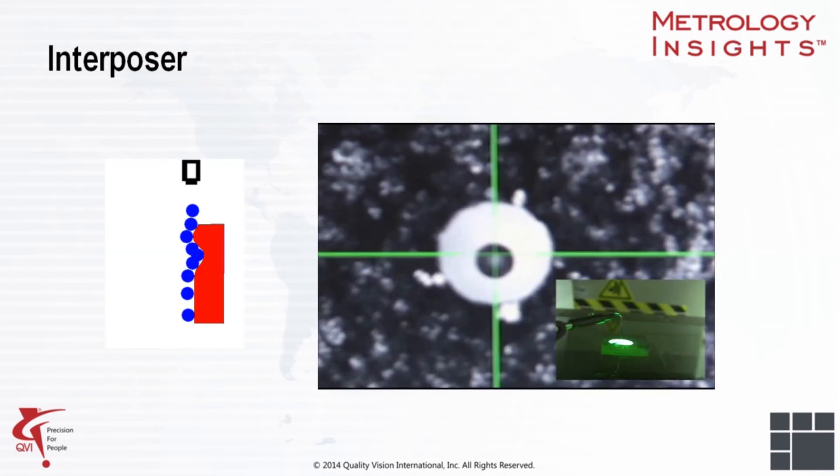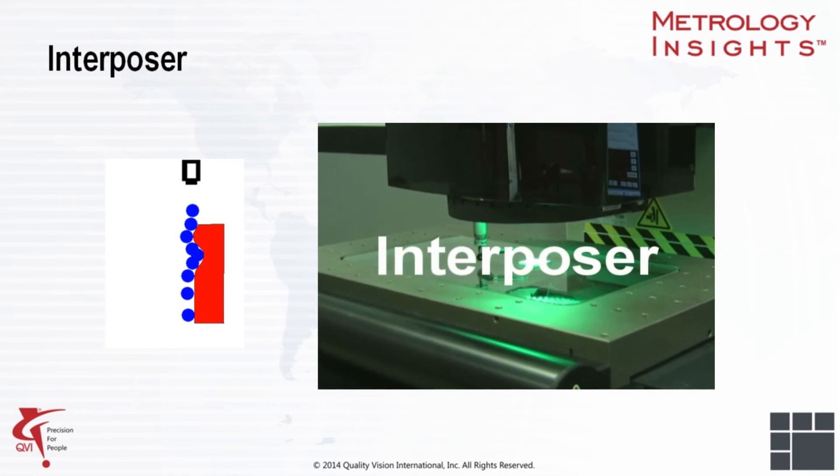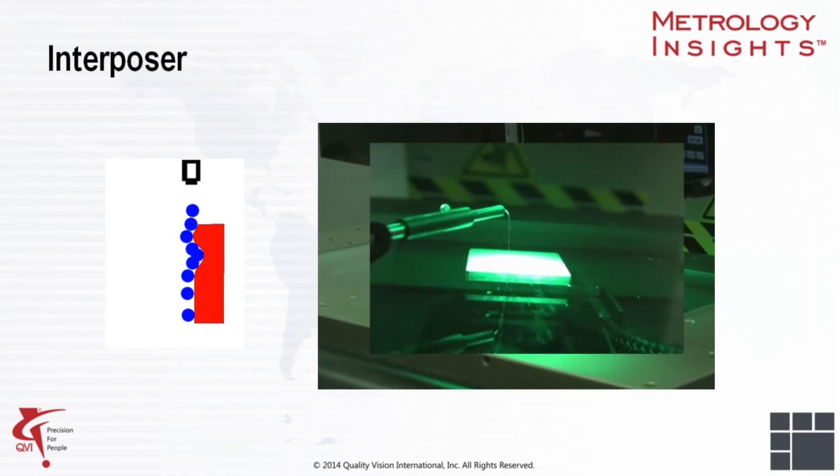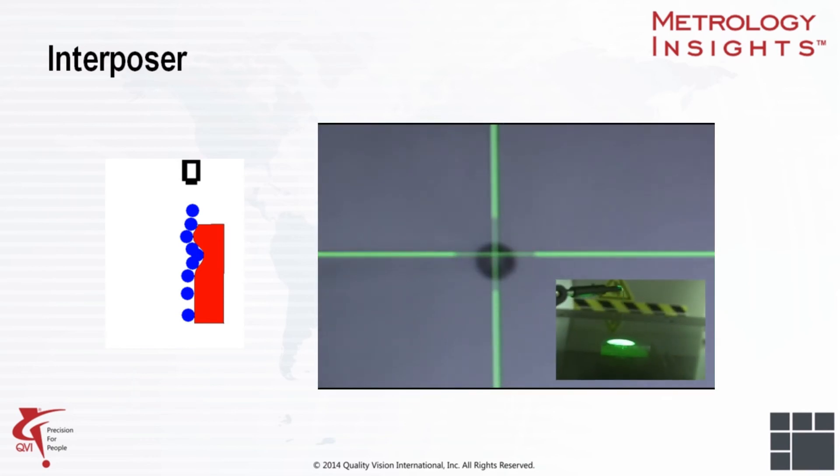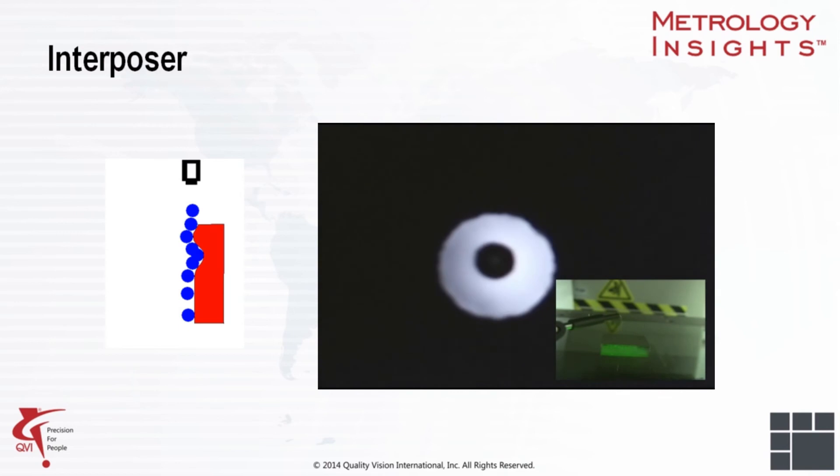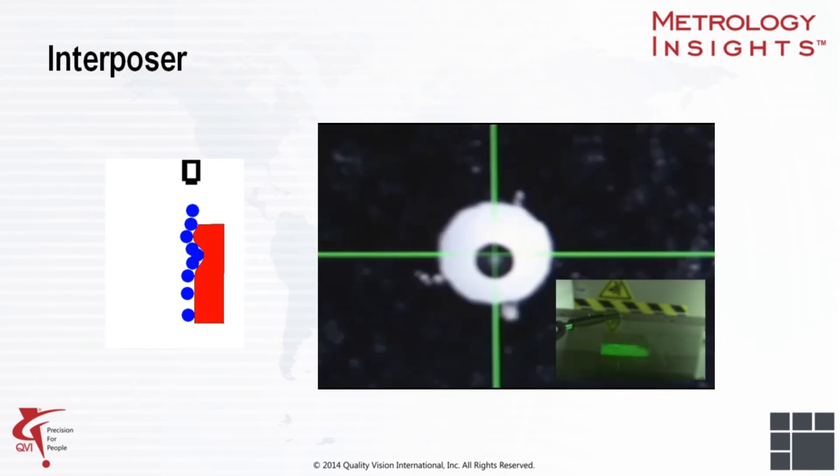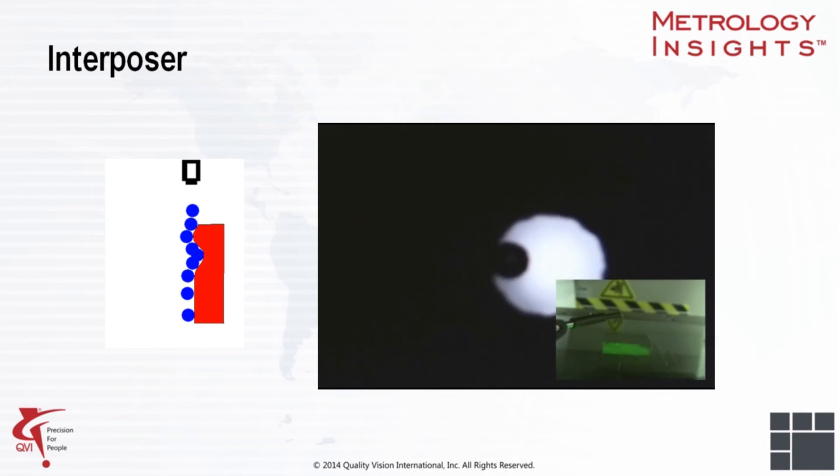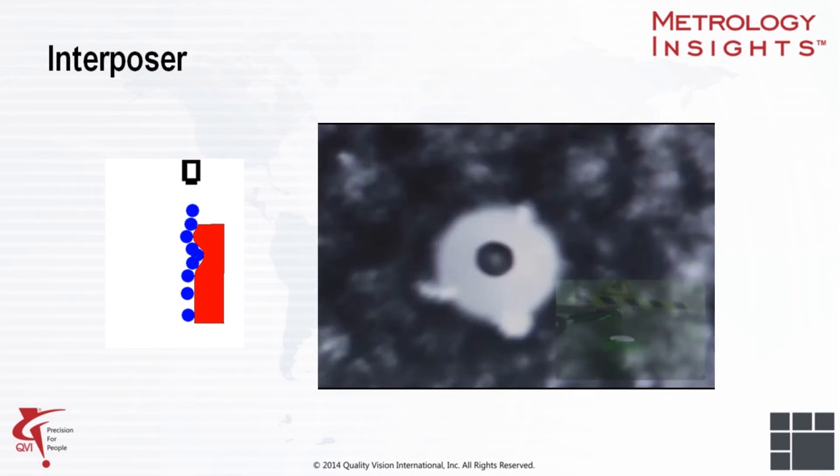A third type of contact microprobe is the interposer. The interposer is a hybrid that combines tactile probing and video imaging to measure in very small tight spaces. The interposer measures points on edge by viewing the displacement of a probe in contact with that edge. The tip diameter of this interposer is 80 microns. The interposer is most useful for measuring very small internal or recessed features.